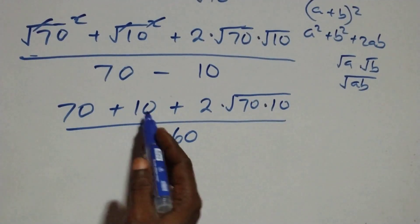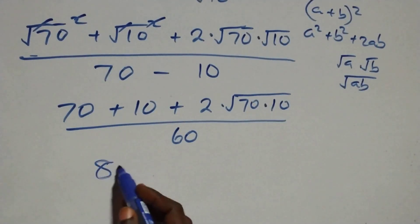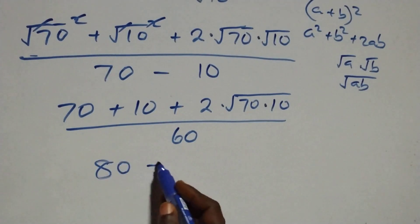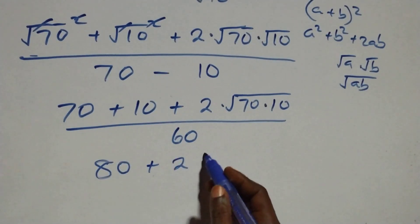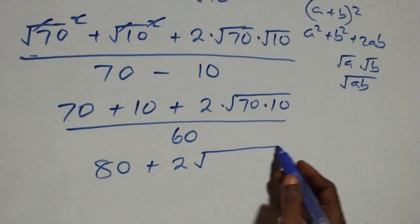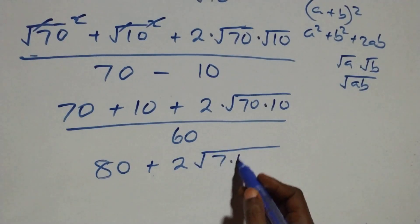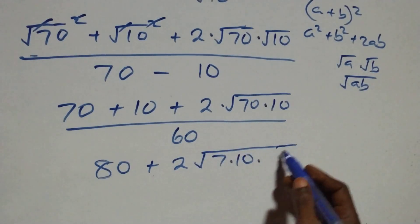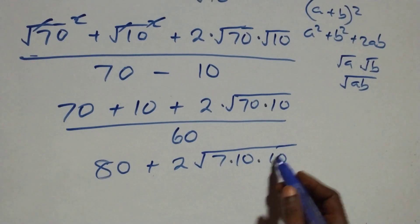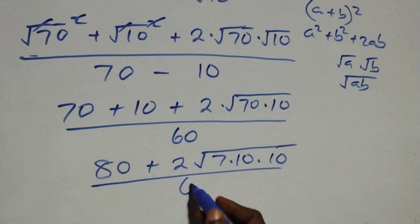So we have 80 plus two times root 700 over sixty. We can express 700 as seven times ten times ten, giving root of seven times ten times ten, all over sixty.